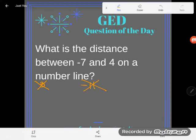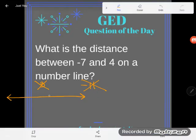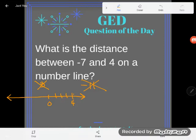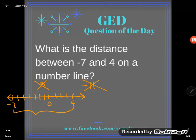Three is a wrong answer because it's just too small. Let me show you what I mean. If you're talking about the distance between negative seven and four on a number line, zero is over here. Four is way over — it's four units to the right of zero. And then negative seven is way off to the left: one, two, three, four, five, six, seven. These numbers are way further apart than three units.